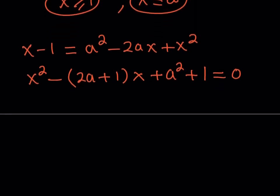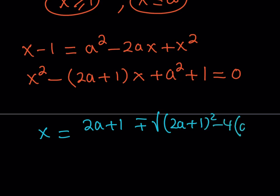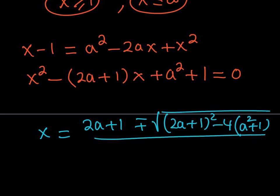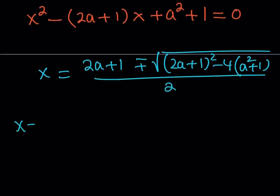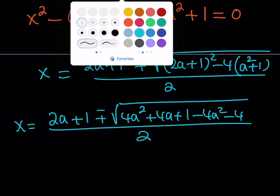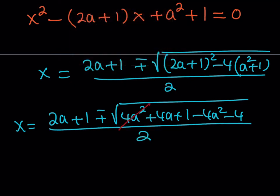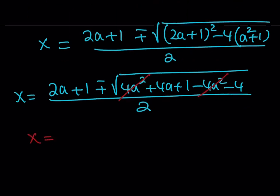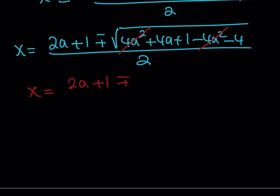Using the quadratic formula, x equals (2a plus 1) plus or minus the square root of (2a plus 1) squared minus 4 times (a squared plus 1), all over 2. Expanding the discriminant: (2a plus 1) squared is 4a squared plus 4a plus 1, and subtracting 4a squared plus 4 leaves 4a minus 3. So x equals (2a plus 1) plus or minus the square root of (4a minus 3), all over 2.